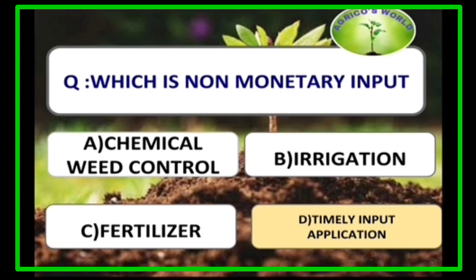Timely input application is a non-monetary input. Chemical weed control, irrigation, and fertilizer are all monetary inputs.